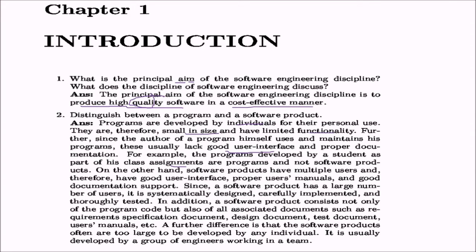Software products, on the other hand, have multiple users, a good user interface, user manuals, and good documentation support. Since a software product has a large number of users, it is systematically designed, carefully implemented, and thoroughly tested. A software product consists not only of program code but also associated documents like SRS, design documents (low level and high level), test documentation, and user manuals. Software products are often too large to be developed by any individual and are usually developed by a team.